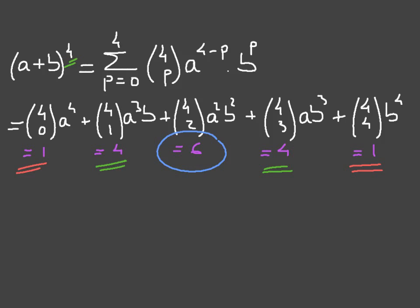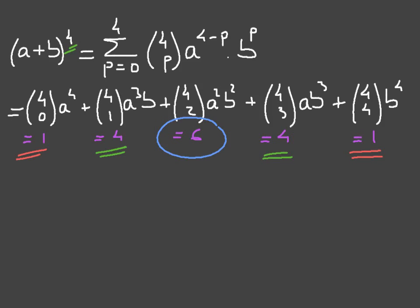I mentioned a bit of symmetry in the binomial coefficients. There's a rule which highlights this: the binomial coefficient C(n, p) will always equal the binomial coefficient C(n, n − p).